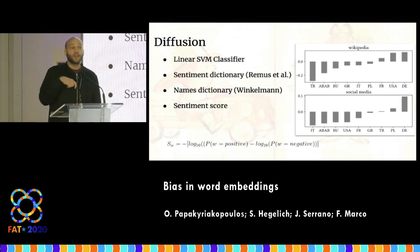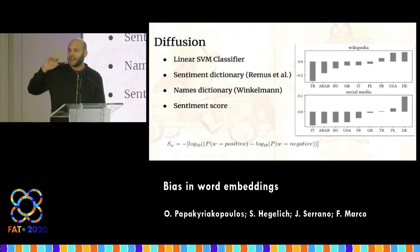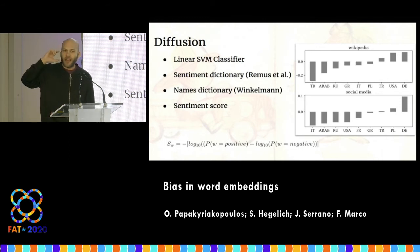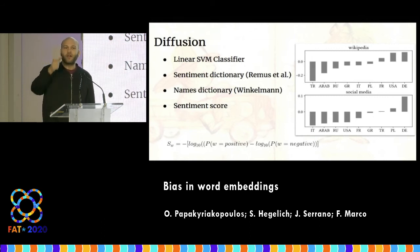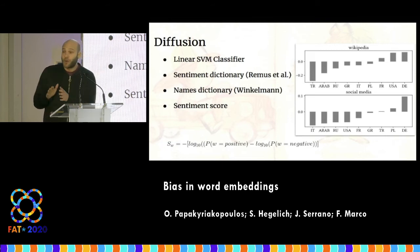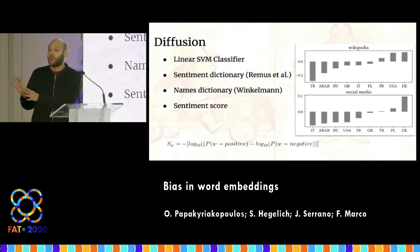We also traced biases related to male and female names. According to both datasets, the biases predicted by the models were equal to those found in the embeddings themselves. This proves that biases in the embeddings are diffused to the downstream models that use them.